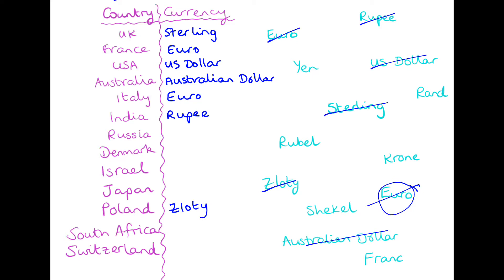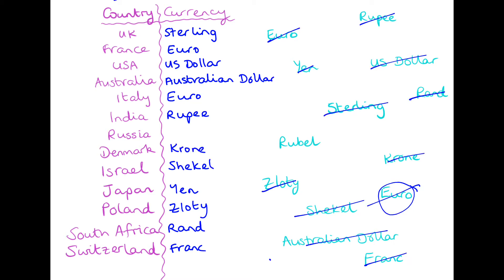Japan's one is yen. And rand — do you know where that belongs? Rand belongs to South Africa. Switzerland uses Swiss francs. Israel uses shekels. Denmark uses krona. And Russia uses rubles. If you look up foreign currencies online, you will find there are so many different countries and currencies. A lot of them are called dollars or pounds, but they're not worth the same as, for example, American dollars or British pounds.